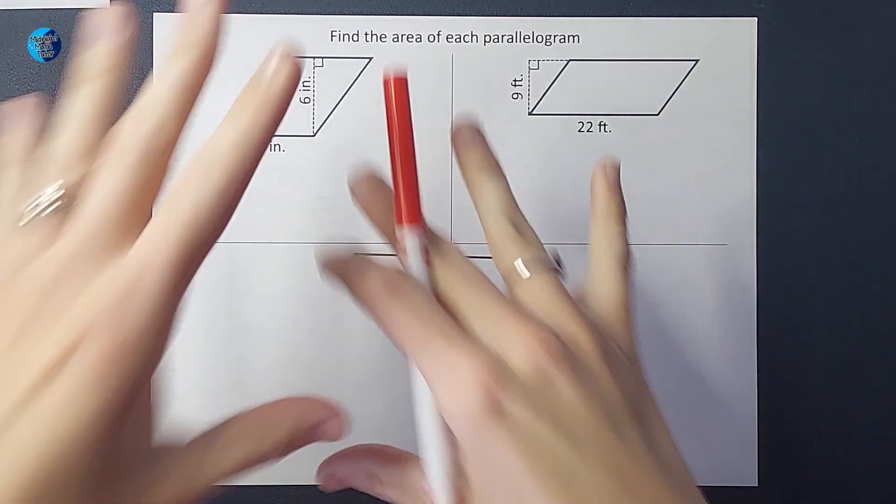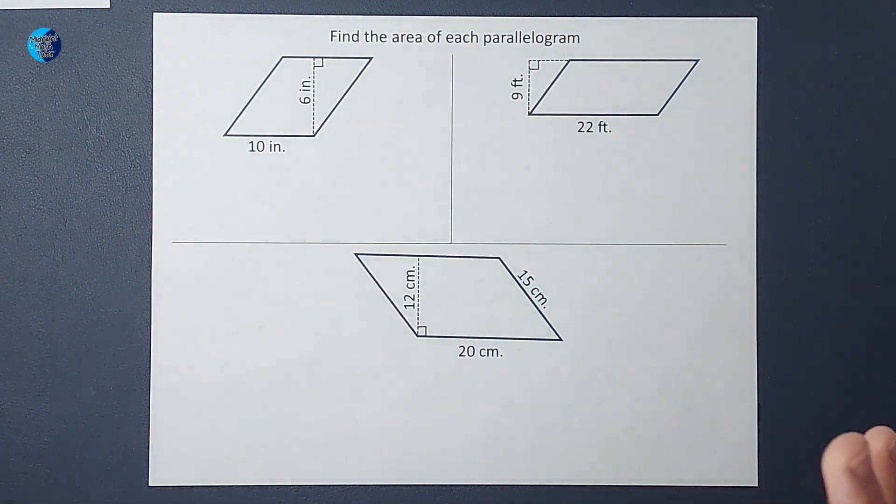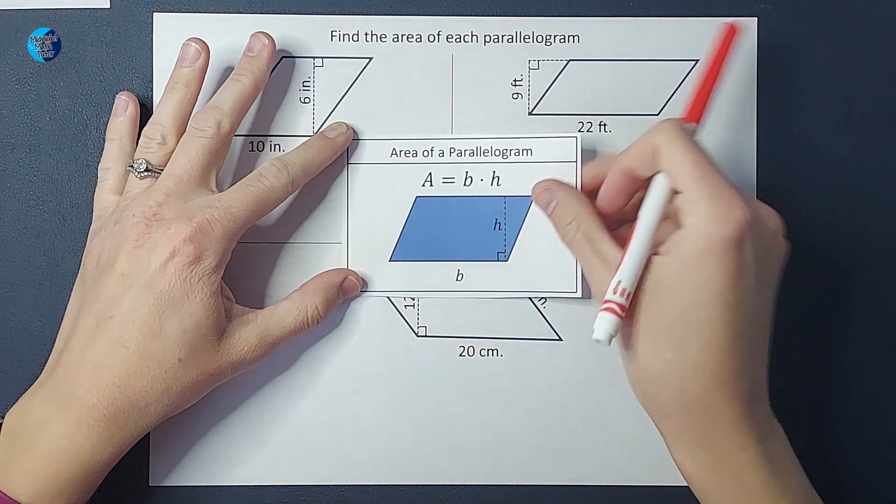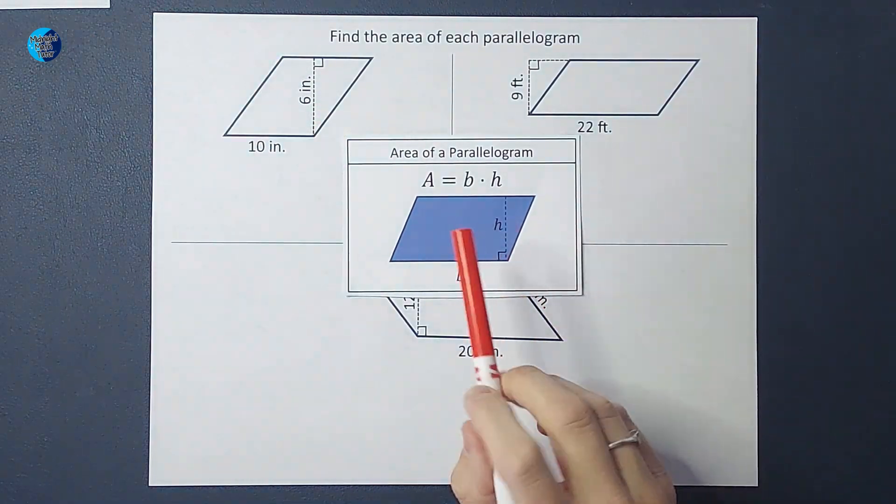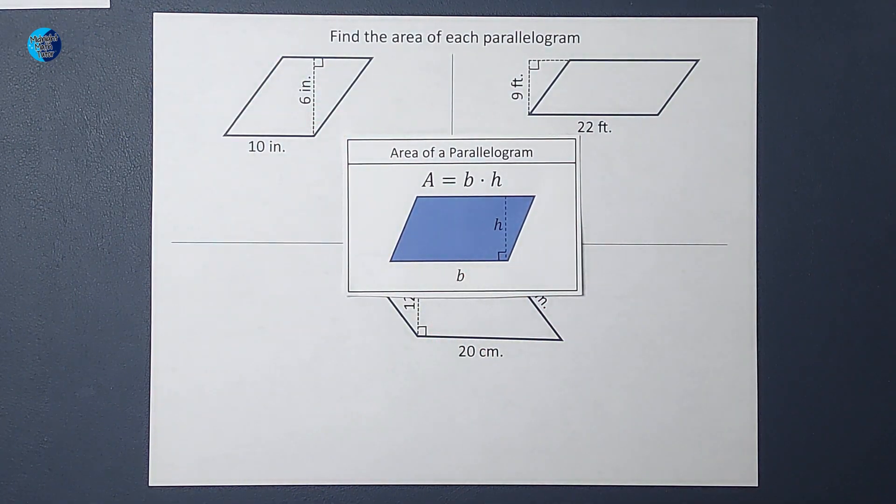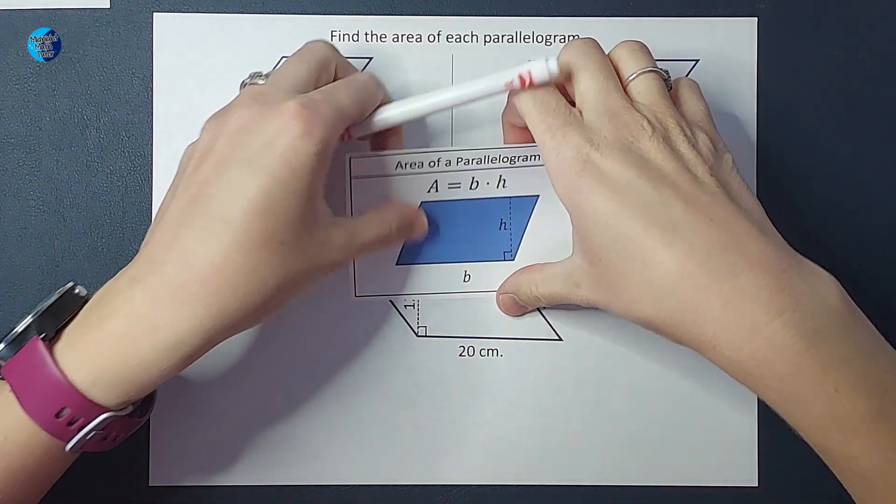Hey guys, we are going to find the area of each of these parallelograms today. The area of a parallelogram is the base times the height. Now if you think to yourself, isn't that the same as the area of a rectangle? You would be correct.